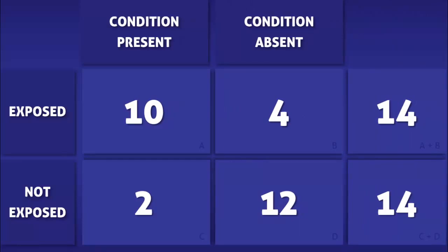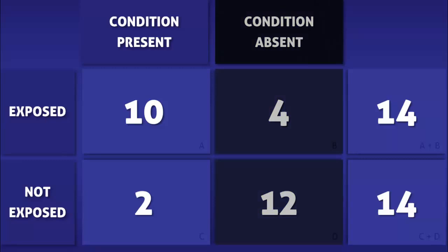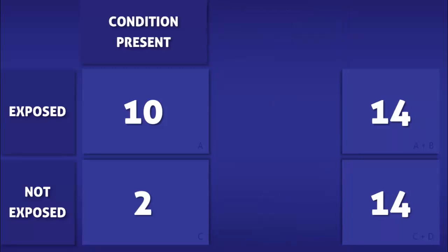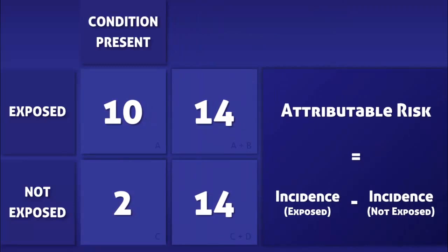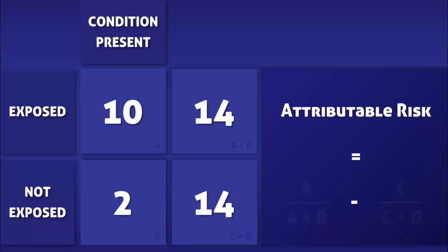To calculate the attributable risk, we no longer require the data found in boxes B and D. The attributable risk is calculated by subtracting the incidence of the condition in those who were exposed by the incidence of the condition in those who were not. The incidence in those who were exposed is calculated by dividing A by A plus B, and the incidence in those who were not exposed is calculated by dividing C by C plus D.